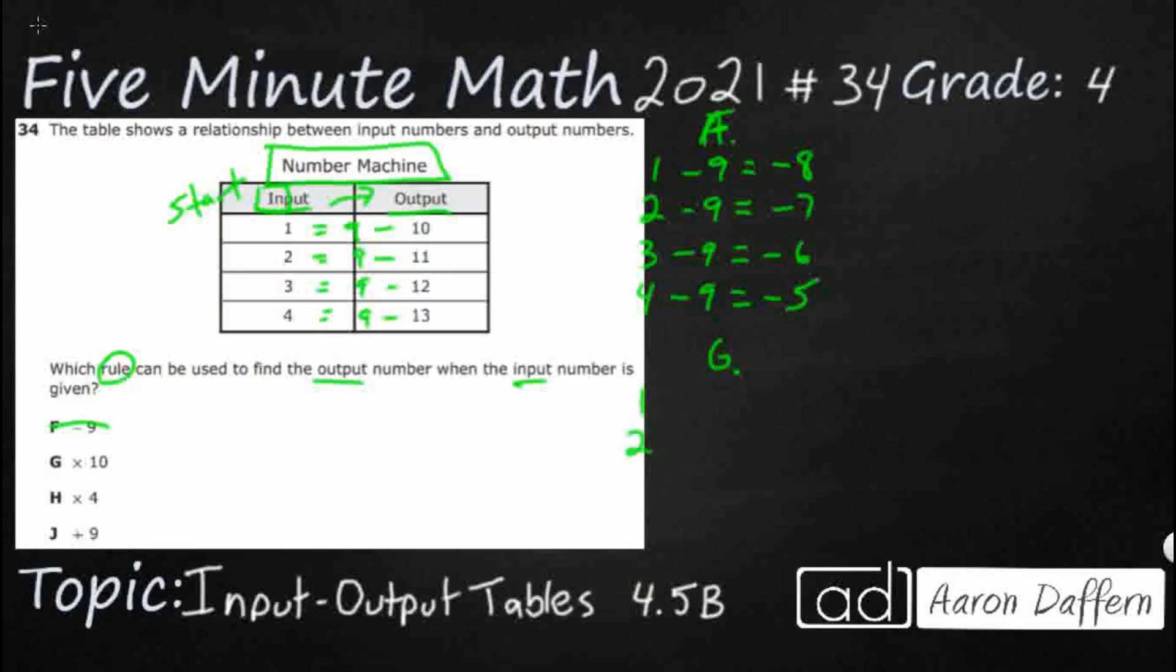Let's go to G. And we've got inputs once again of 1, 2, 3, and 4 times 10. So 1 times 10, that equals 10. That's good. 2 times 10, 20. Nope, we needed 11. So the times 10 works with the first one. And that's the only one it works with.